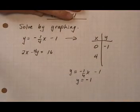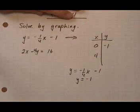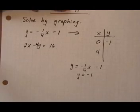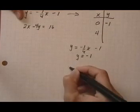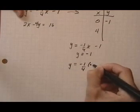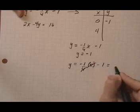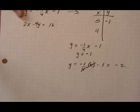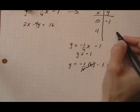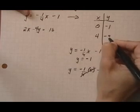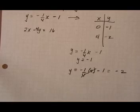So I have zero minus 1 for the first point. Now I'm going to put in x is 4. So if x is 4, I get minus 1 fourth times 4, take away 1. 4 and 4 cancel out. It gives me minus 1 minus 1 or negative 2. So when x is 4, y is negative 2. So those are the points for the first equation.